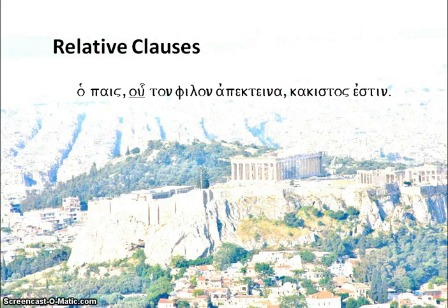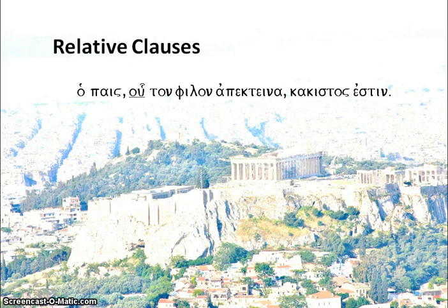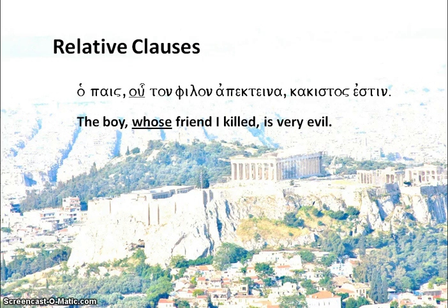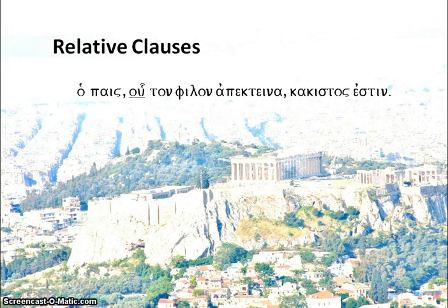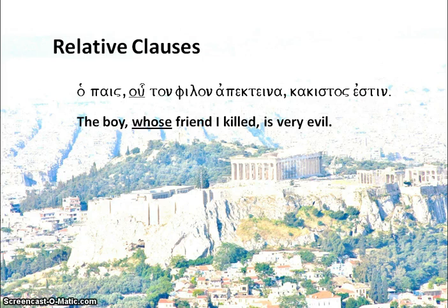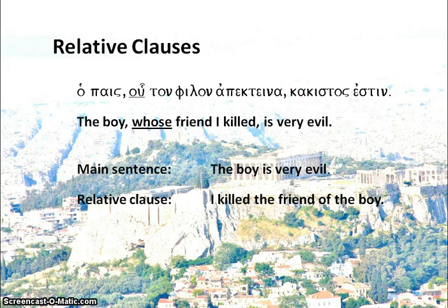Notice that 'the boy' is nominative, whereas 'who' is genitive. That's because a relative clause essentially has its own grammar, equivalent almost to a separate sentence. Whereas the boy is the subject of the verb in the main clause — 'the boy is very evil' — in the relative clause he is genitive, because it is 'the friend of him'. So: 'The boy, whose friend I killed, is very evil.' The case of the relative pronoun does not depend on the noun it agrees with, but on its own function within the clause — i.e. it is determined by what the antecedent is doing in the relative clause. Here the main clause has 'the boy' as nominative, but in the relative clause it is 'I killed the friend of the boy' — 'of the boy' is genitive, therefore the relative pronoun is in the genitive.